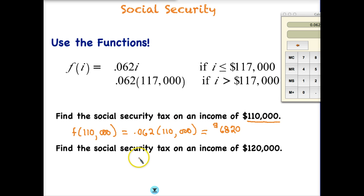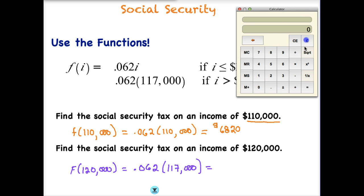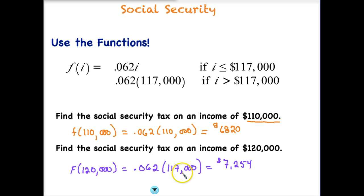Now let's look at the second scenario. We have an income of $120,000. Since our income is greater than $117,000, we have to use the bottom equation. Our function when our income is $120,000 is going to equal 0.062 times $117,000. There's no variable here because we know we only get taxed up to the first $117,000. The tax rate times $117,000 gives us $7,254. That is the maximum tax you'll have to pay in a year. And that's one example of piecewise functions.